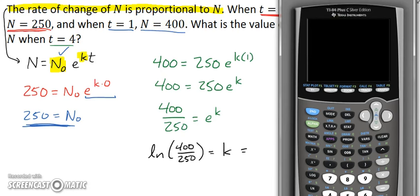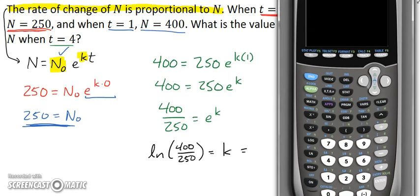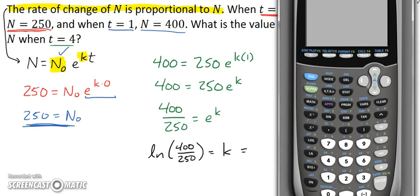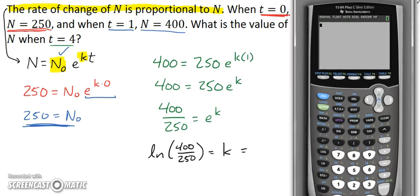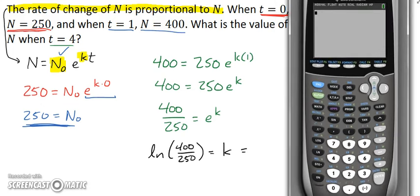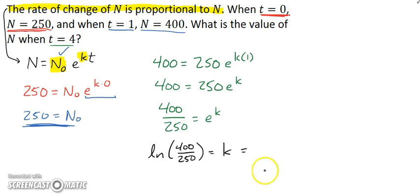And if I use the calculator, I can get that value. So, I need ln of 400 over 250. And I get a value of about 0.470. And now I can check off my k also.